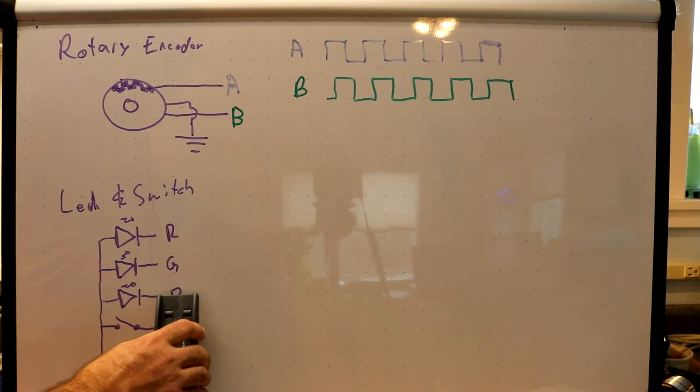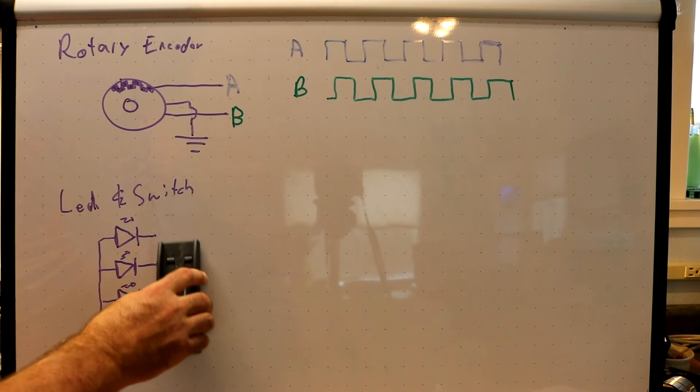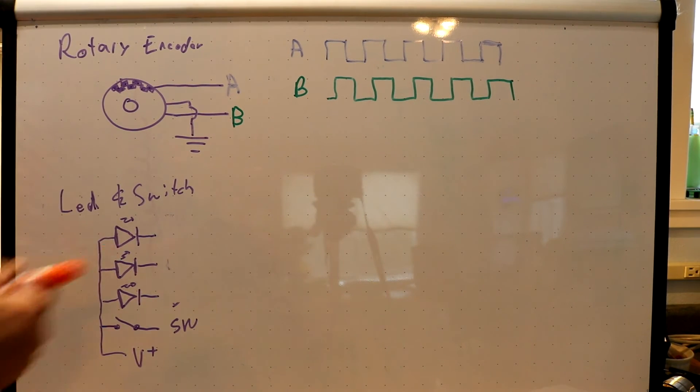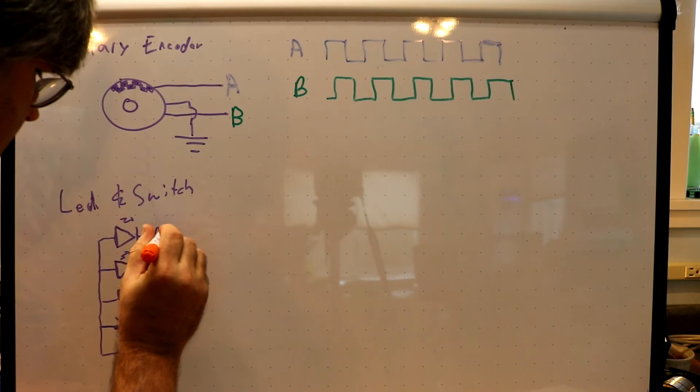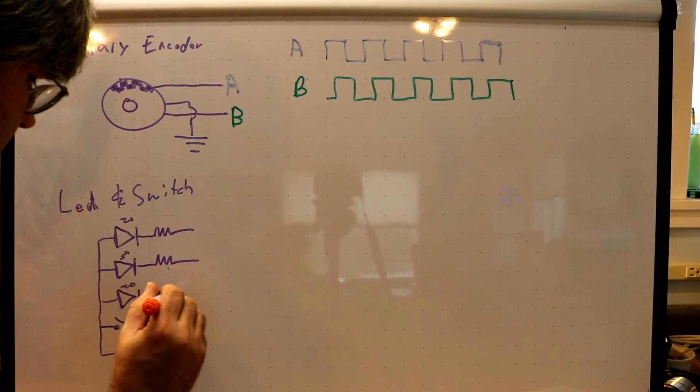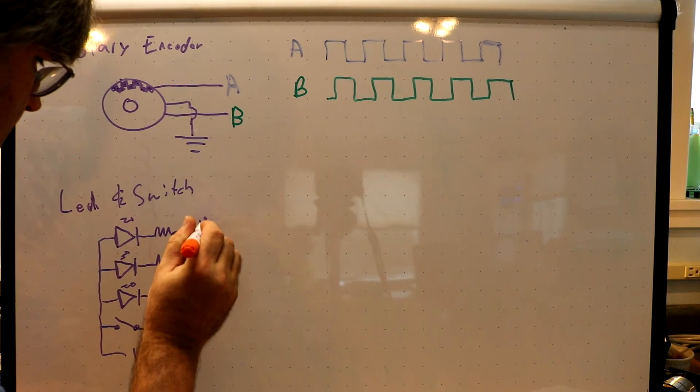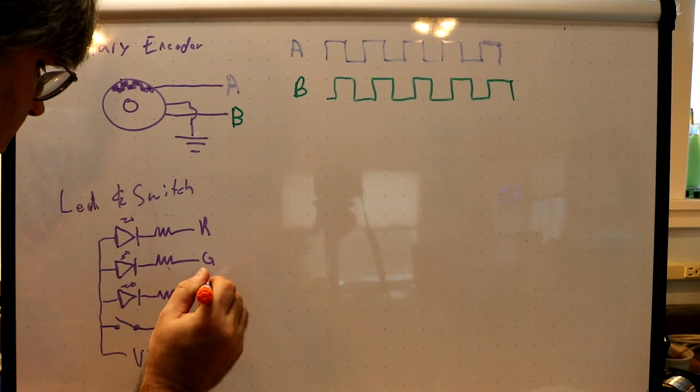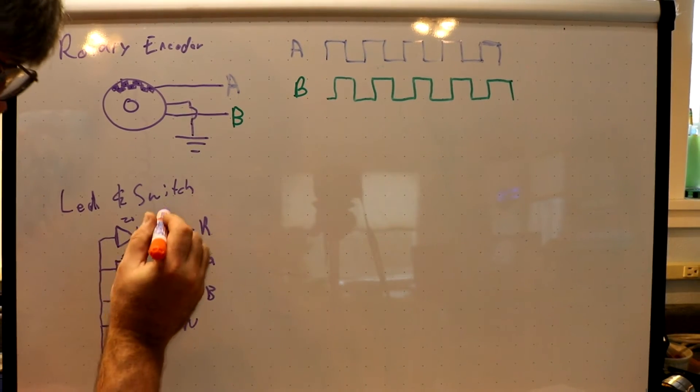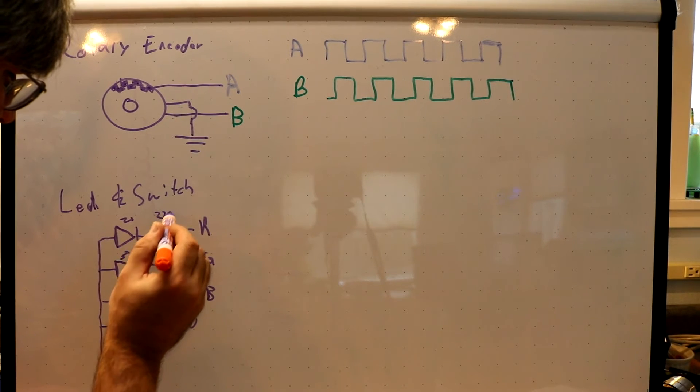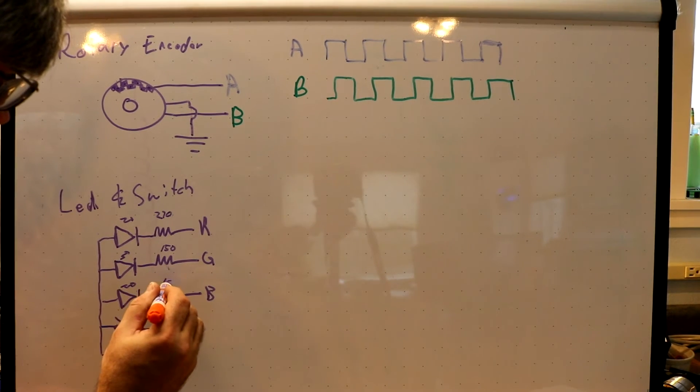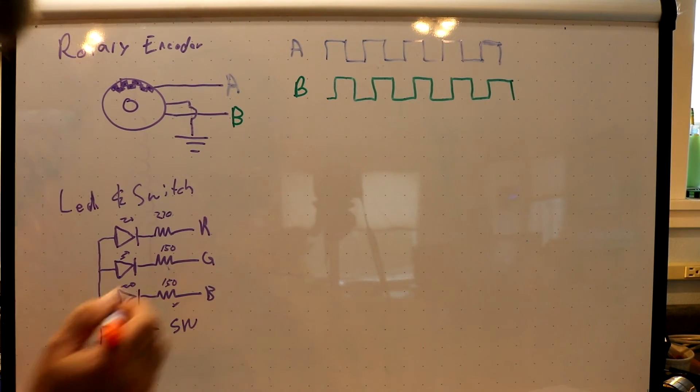One thing that is important on these so you don't burn them out is you do want to put some resistors on them. In my demo, I ended up using for the red I put a 270, for the green and the blue I put 150s.